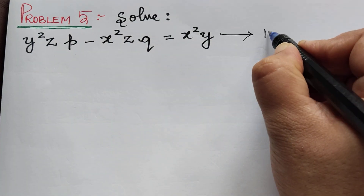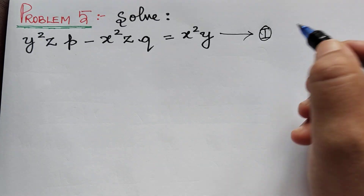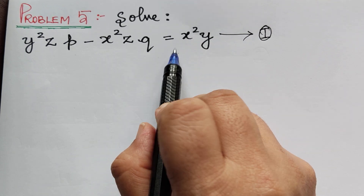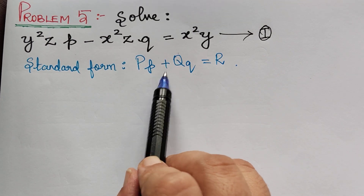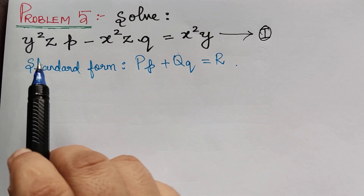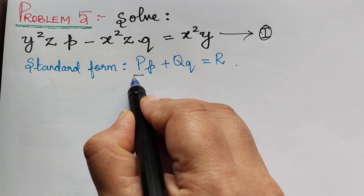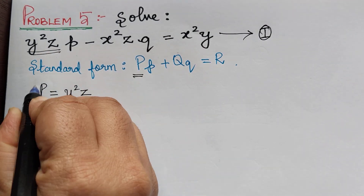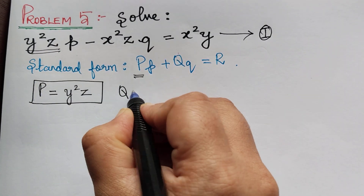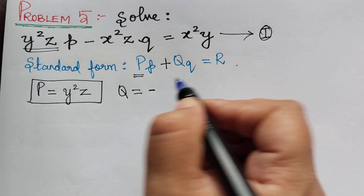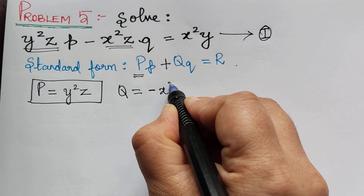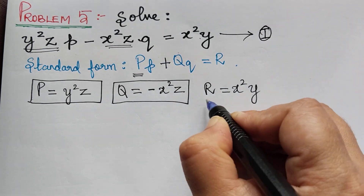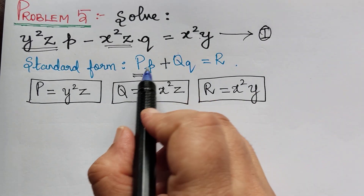As the first step, mark this as equation 1 and compare it with the standard form. The standard form of Lagrange's type of partial differential equation is given by P·p + Q·q = R. Comparing, we get capital P = y²z, capital Q = −x²z (note the minus sign), and capital R = x²y.